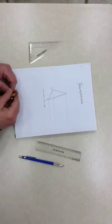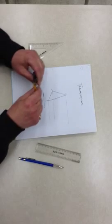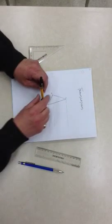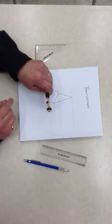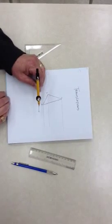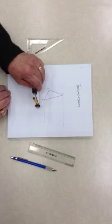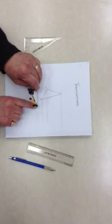To find A prime, the new location of A, we have to move it that exact length. So you take your compass, stick it in to one end of the translation line, open it up to the tip of the arrow, and then stick the point in point A.